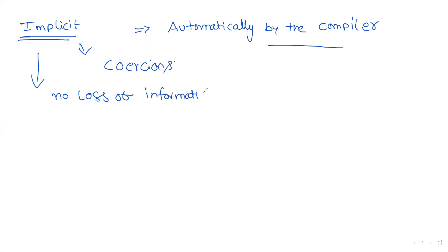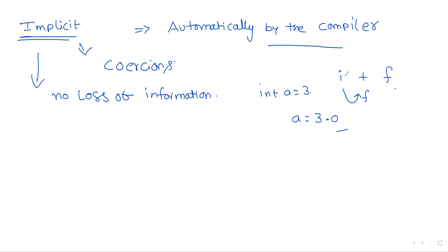The main advantage of implicit conversion is that there is no loss of information. For example, in i + f, if i is converted into float, there is no problem. If integer variable a equals 3 and you convert it to 3.0, there is no problem. Lower data types are automatically converted into higher data types by the compiler, with no loss of information.